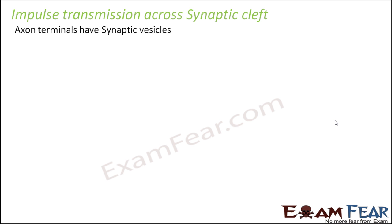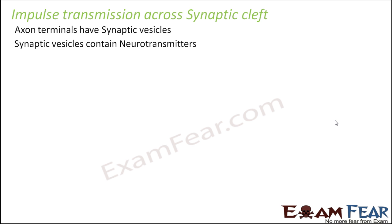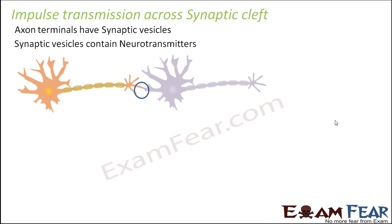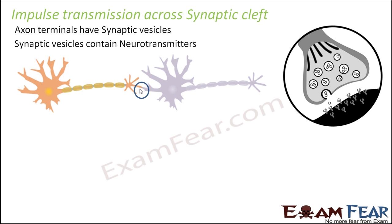Near the synapse, it is the axon terminals of one neuron which communicate with the cell body or the dendrite part of the second neuron. In the axon terminals we have synaptic vesicles, and the synaptic vesicles contain the neurotransmitters. The swollen part of the axon terminal is often known as the synaptic knob. Inside the synaptic knob you have vesicle-like structures which contain the neurotransmitters — these are the synaptic vesicles.